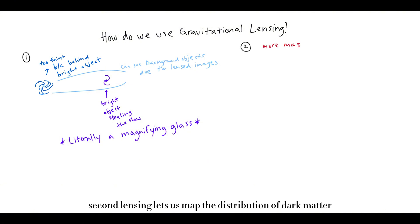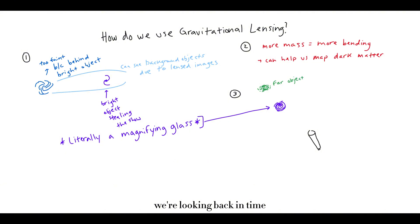Second, lensing lets us map the distribution of dark matter, since the amount of bending depends on the total mass of the lens, including both the visible and invisible, or dark matter. And finally, gravitational lensing helps us study the early universe. By observing these distant objects, we're looking back in time, and keep in mind, lensing helps us see really, really far objects. And seeing how galaxies and structures are through lensing helps us understand how galaxies and these structures formed billions of years ago.